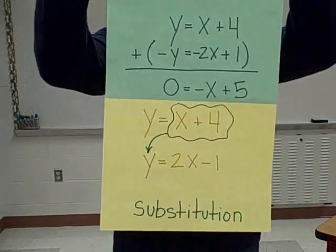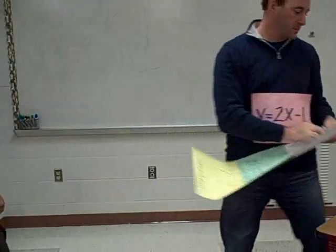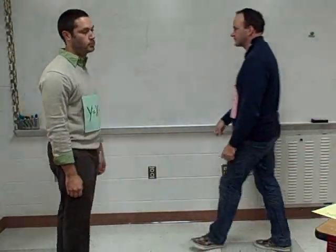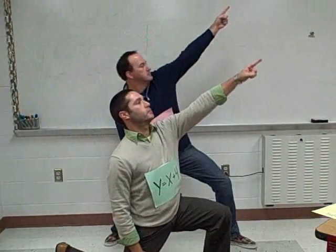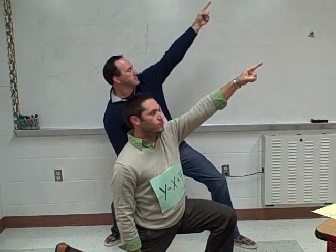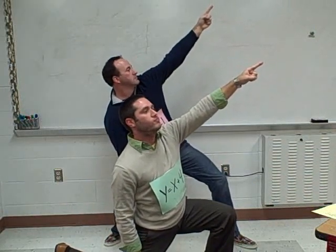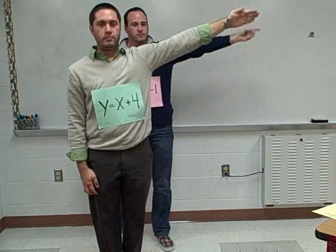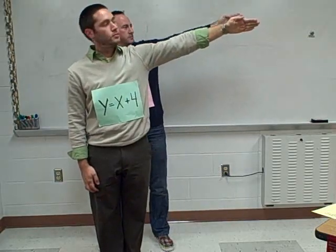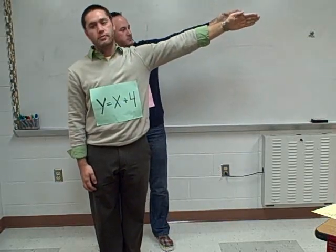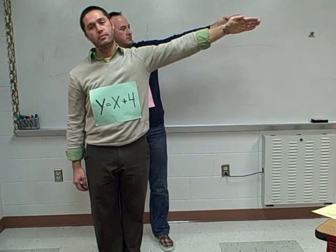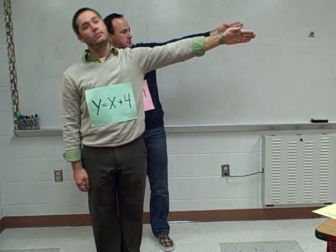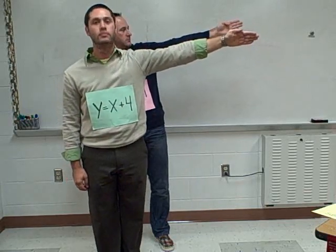To solve for the same slope and different y-intercepts — those are parallel lines, they'll never connect. There's no solution they share, no point in common, nothing in common along the lines. But if they have the same slope and the same y-intercept, those are the same exact lines. They will always connect — every solution they share, all points in common, all things in common along one line.